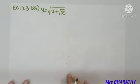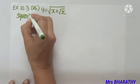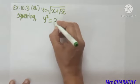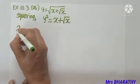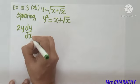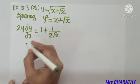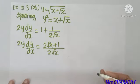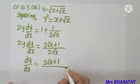Question number 26: y = √(x + √x). To differentiate, since there is a square root I can square both sides. Squaring gives y² = x + √x. Differentiating: 2y·(dy/dx) on the left; on the right, x becomes 1 and √x becomes 1/(2√x). So 2y·dy/dx = 1 + 1/(2√x).